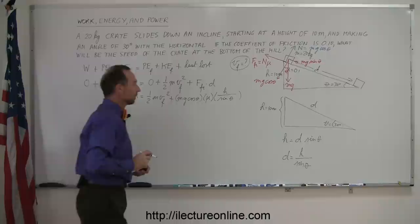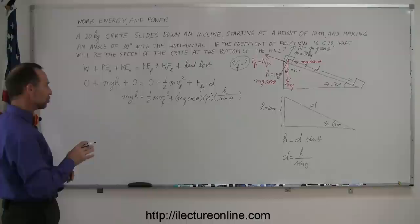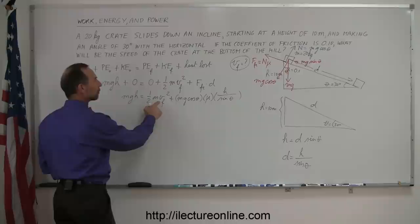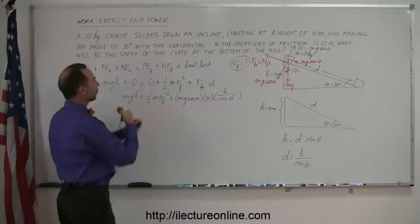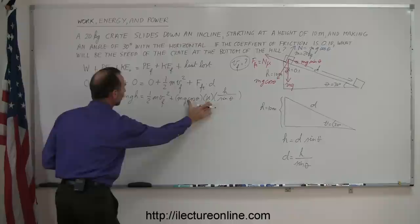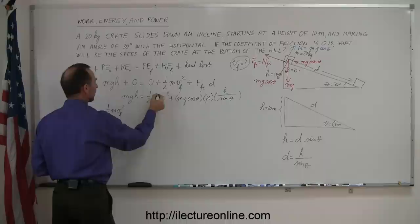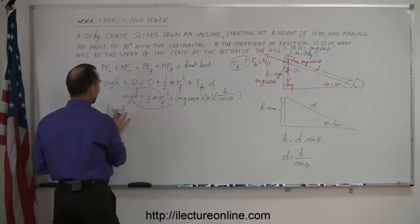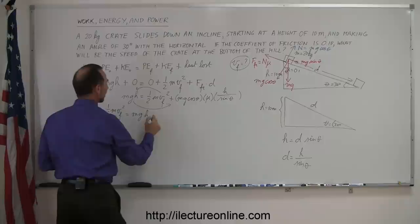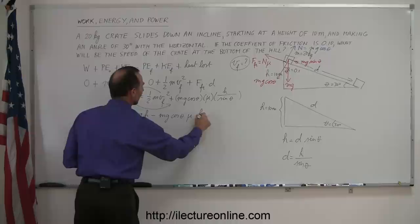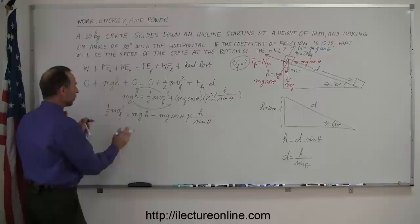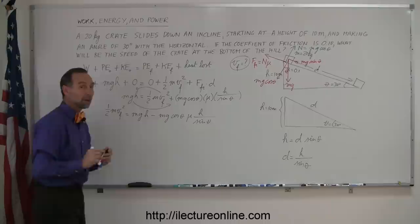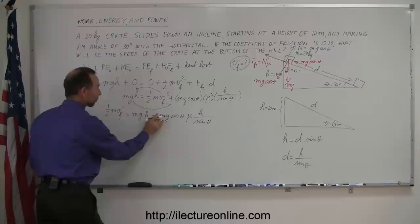Now we solve the equation for the variable we're looking for. Moving the kinetic energy term to the left side gives us one-half mv squared equals mgh minus mg cosine theta times mu times h over sine of theta. This makes sense: without friction we'd just have kinetic energy equals initial potential energy, but here we subtract the energy lost due to friction. Every term has mass m, so that cancels out. Multiplying both sides by 2 gives v final squared equals 2gh minus 2g cosine theta times mu times h over sine of theta.